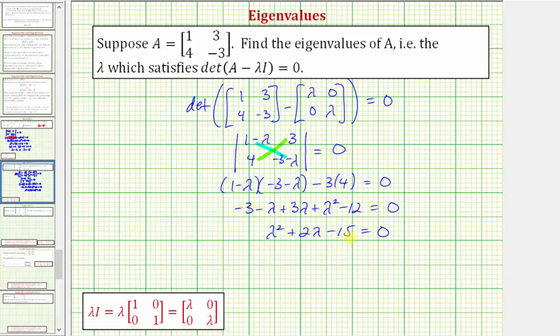We have a quadratic equation in terms of lambda which does factor. The left side factors into two binomial factors. The factors of lambda squared are lambda and lambda. The factors of negative fifteen that add to positive two are positive five and negative three.